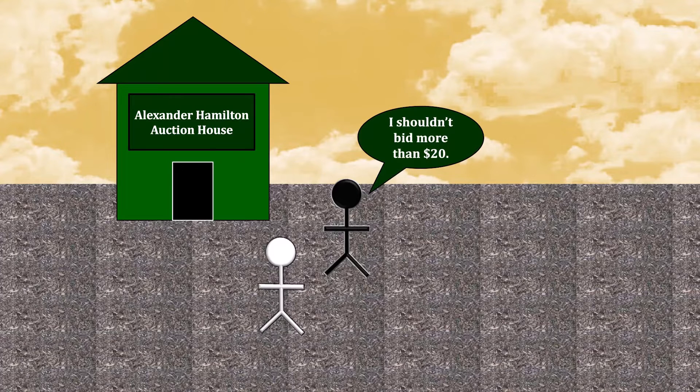The stranger can reason that he should not bid more than $20. That's because he values the book at $24, and the next incremental bid that the Auction House allows after $20 is $30.